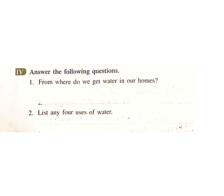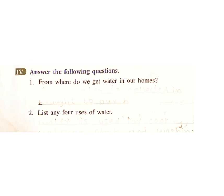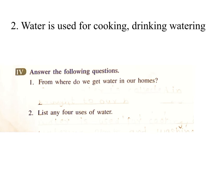Exercise 4: Answer the following questions. 1. From where do we get water in our homes? Answer: River water is collected in dams and brought to our homes through taps. 2. List any four uses of water. Answer: Water is used for cooking, drinking, watering plants, and washing.